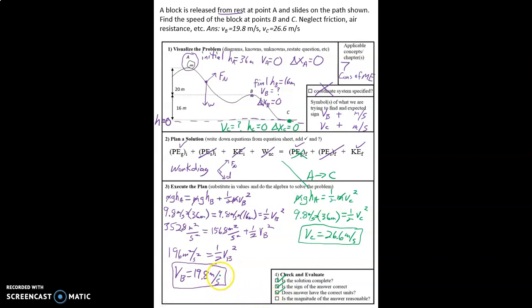And are the magnitudes of the answers reasonable? Well, this is pretty fast. This is like 40 miles an hour and this is like 55, 60 miles an hour. So that's pretty fast. However, we're talking about a block that slid down a path with no friction, no air resistance, and it went downhill over 100 feet. So yeah, it's going to be going pretty fast if there's no friction and it went downhill that much. So that makes, it's not crazy to think that it would be going pretty fast.